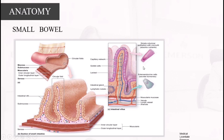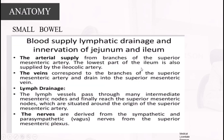Moving on to blood supply, lymphatics, and innervation of the small bowel: the arterial supply comes from branches of the superior mesenteric artery. The lowest part of the ileum is also supplied by the ileocolic artery. The veins correspond to the branches of the superior mesenteric artery and drain into the superior mesenteric vein. The lymph vessels pass through the main intermediate mesenteric nodes and finally reach the superior mesenteric nodes, situated around the origin of the superior mesenteric artery. The nerves are derived from the sympathetic and parasympathetic (vagus) nerves from the superior mesenteric plexus.